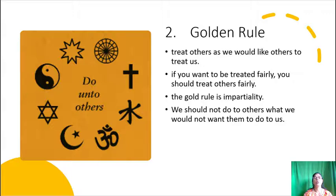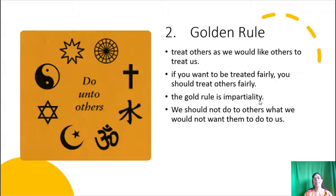The second deontological theory is the Golden Rule. The Golden Rule commands us to treat others as we would like others to treat us. If you want to be treated fairly, you should treat others fairly. The hallmark of the Golden Rule is impartiality — that is, we should not do to others what we would not want them to do to us.